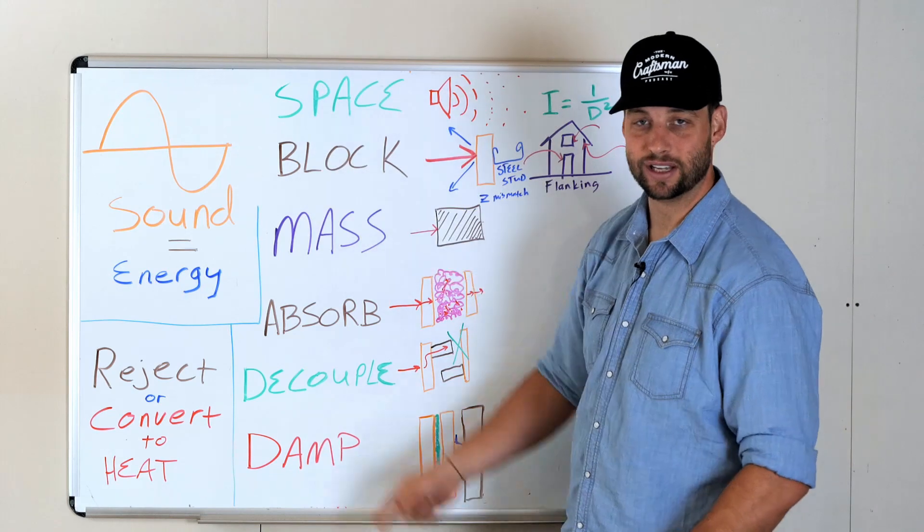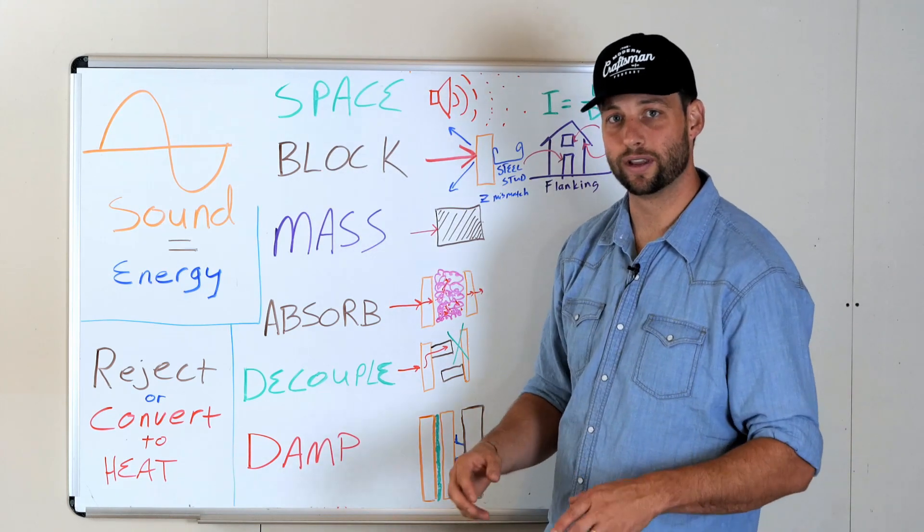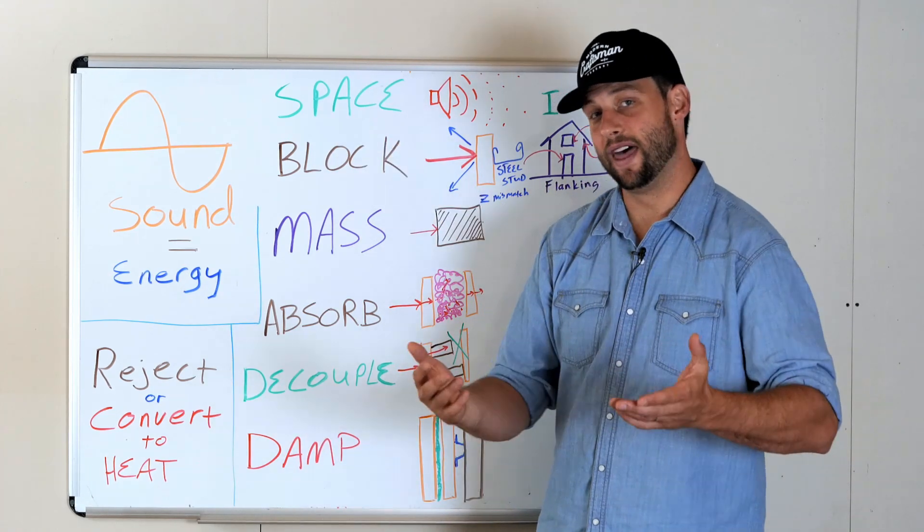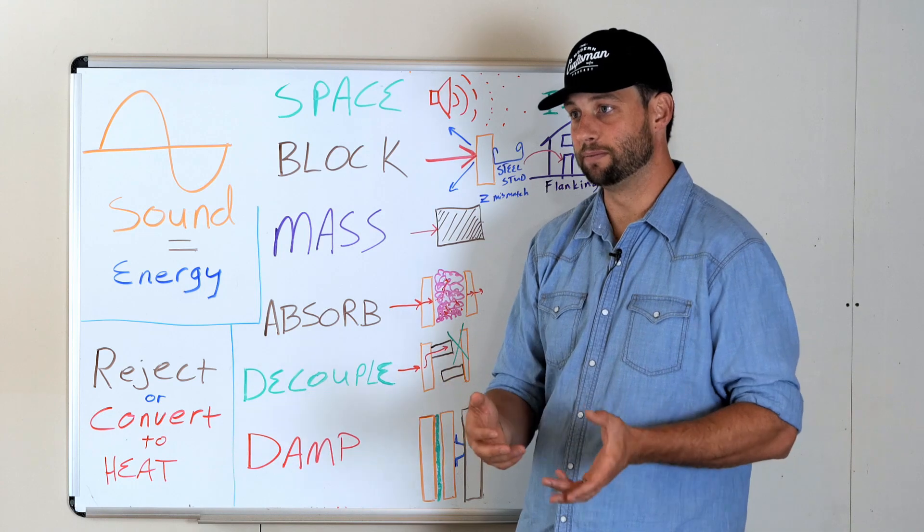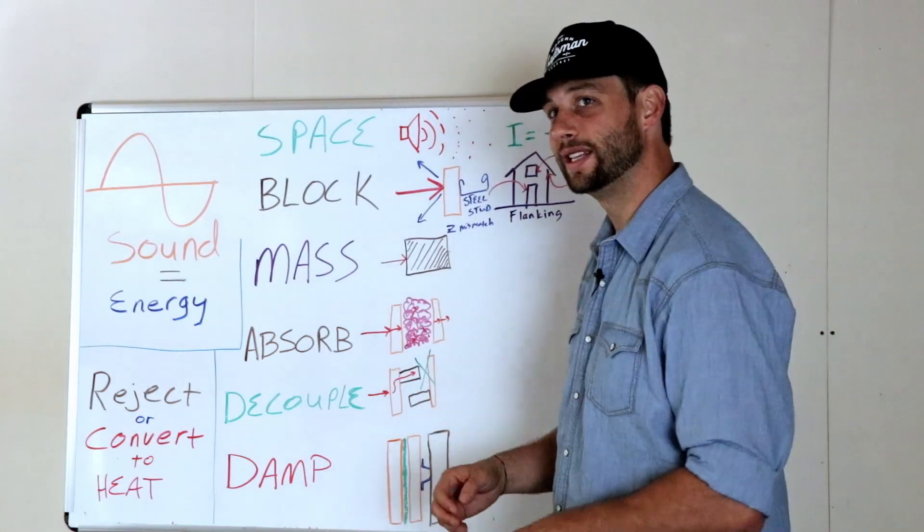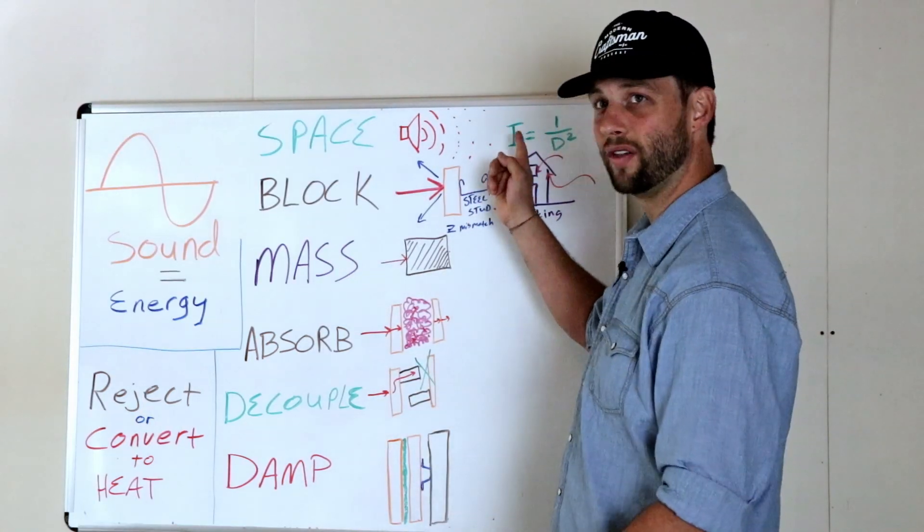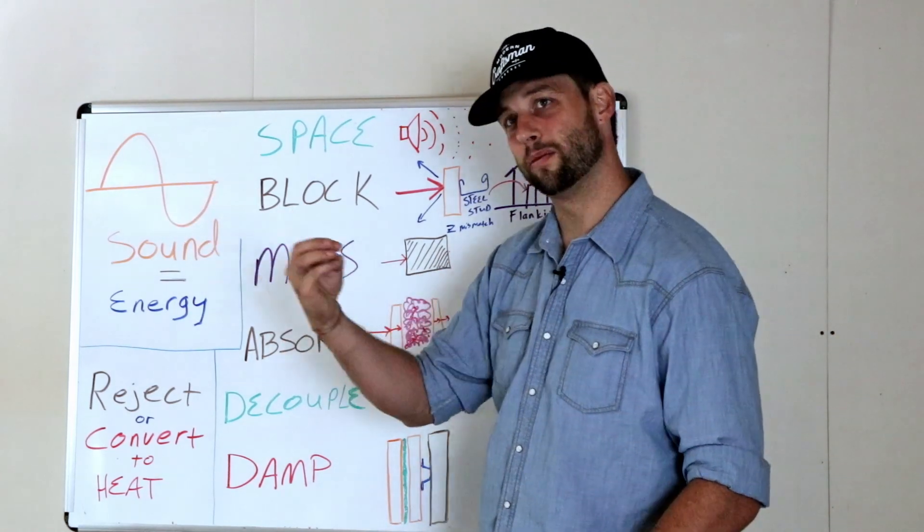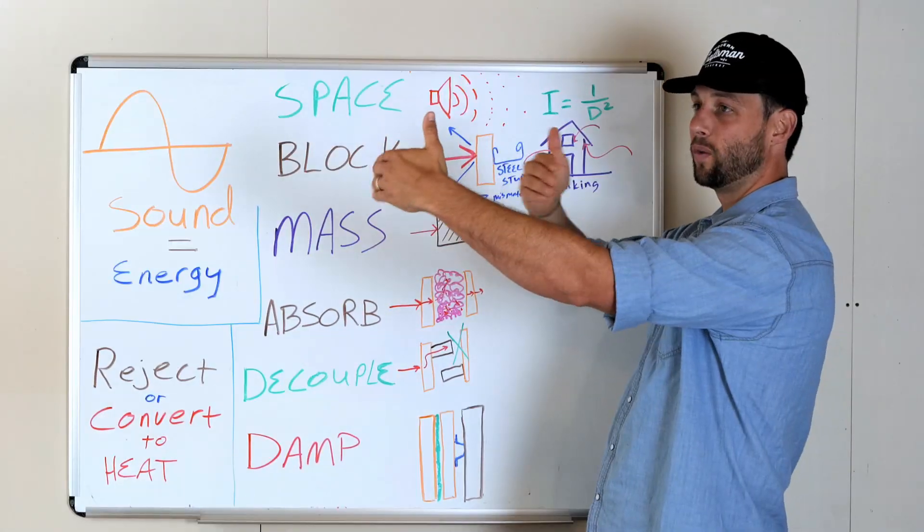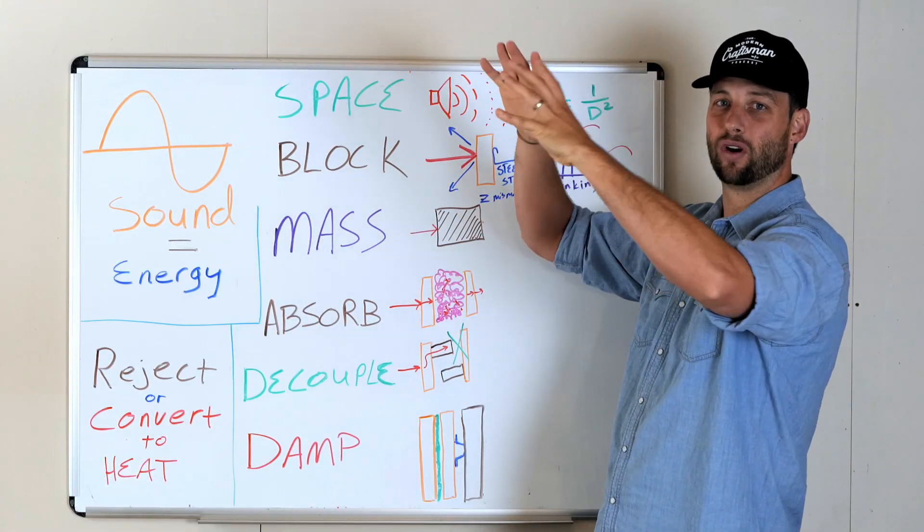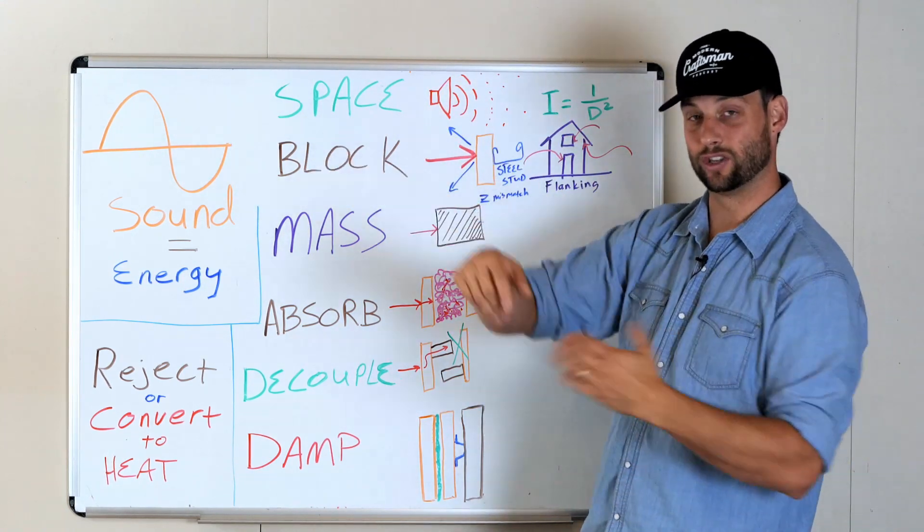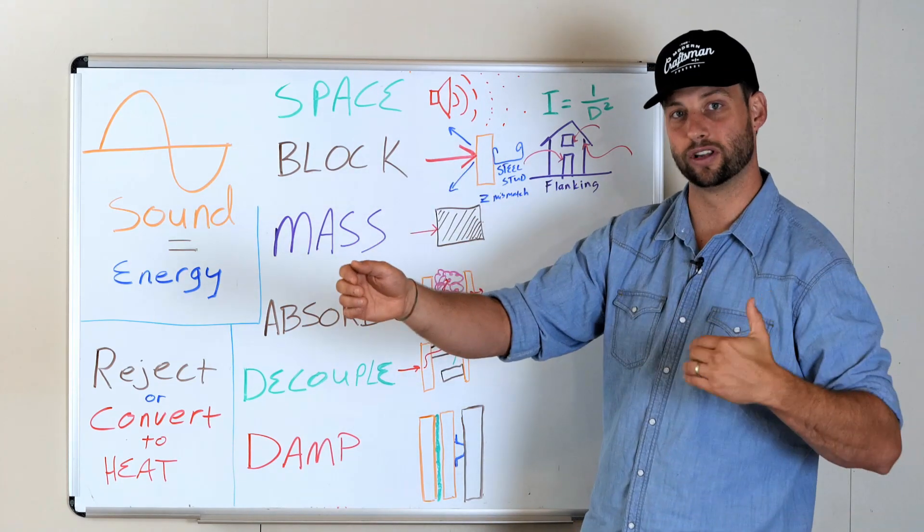So let's jump right into it. Here are six strategies that we can use while we're making a wall assembly to keep sound from coming into a space. We can give ourselves space. Now, that, on the simplest terms, means that you can move. If you don't like the sound of something, go somewhere else. Because sound loses its intensity by something called the inverse square law. That means that the further away from a source that you get, because sound is radiating in three dimensions, the further away you get, that power has to get spread out over a lot bigger area, and that area is the square of the distance that you are away.